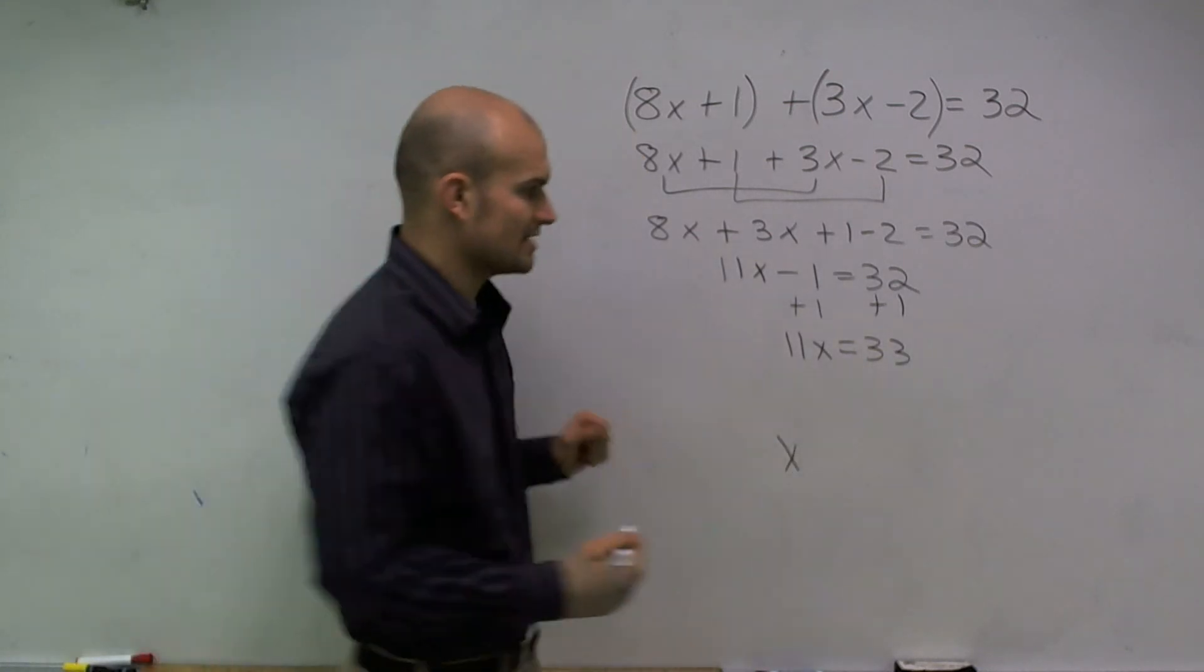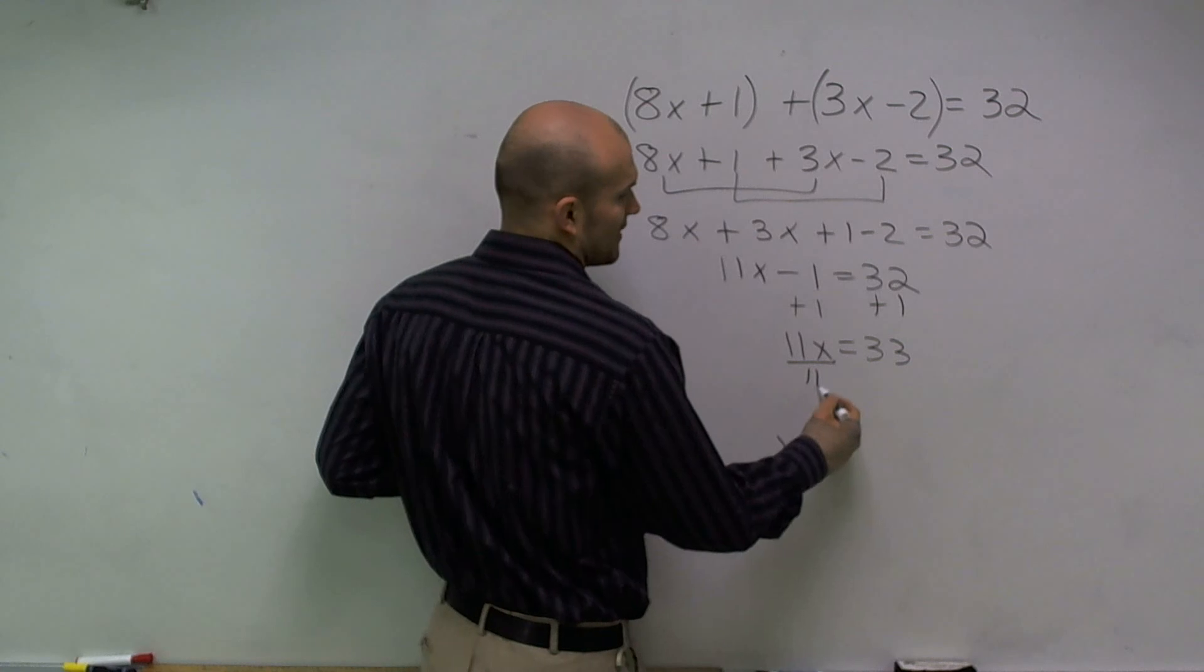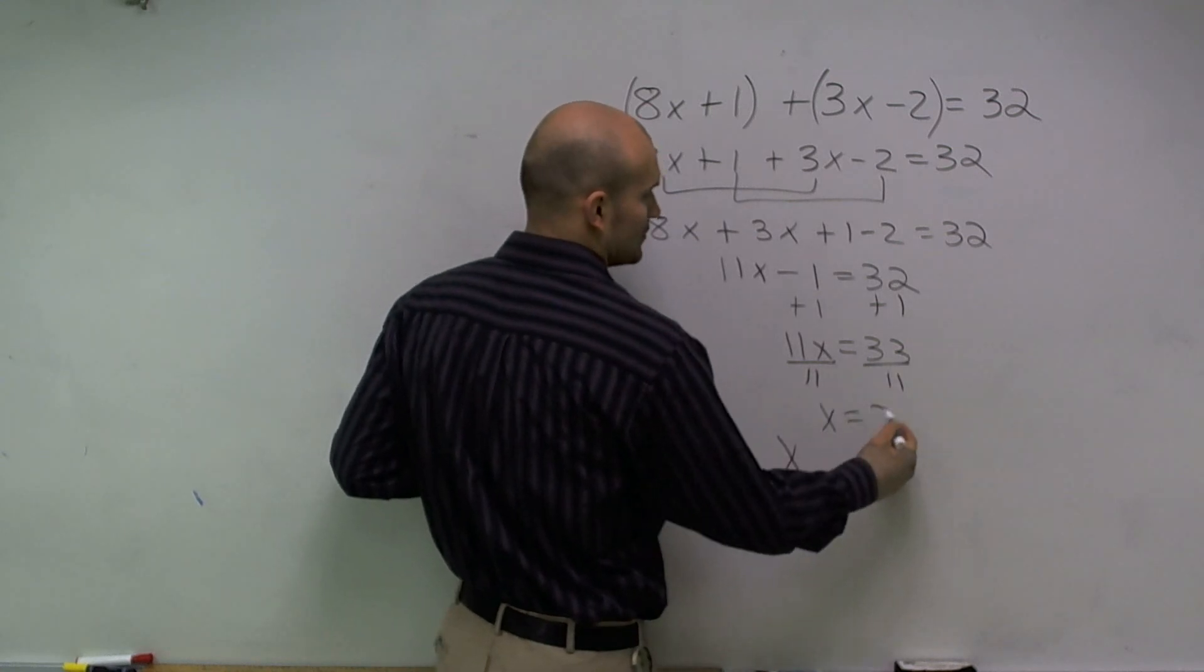Then to finish off the problem, to get rid of that 33, I need to divide by 11 on both sides. And I get x equals 3.